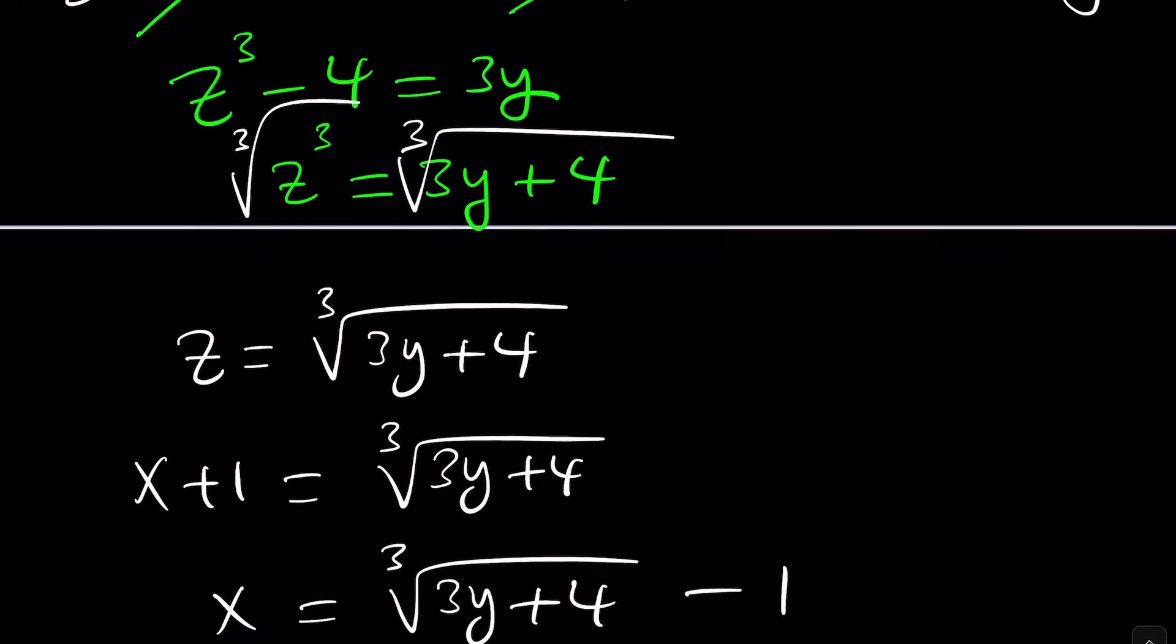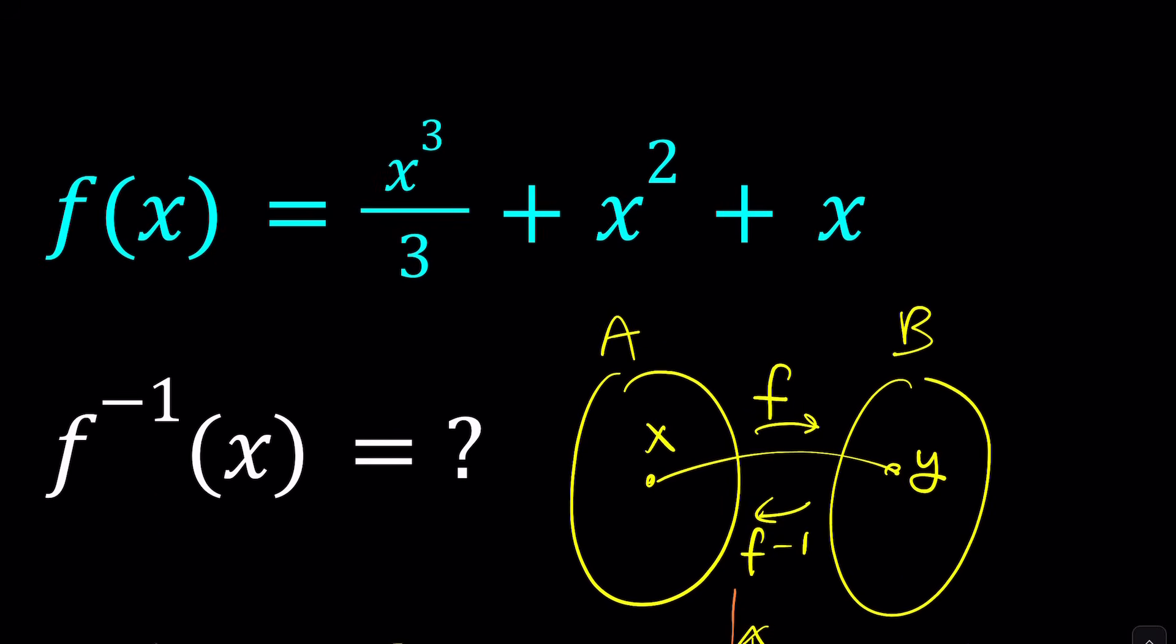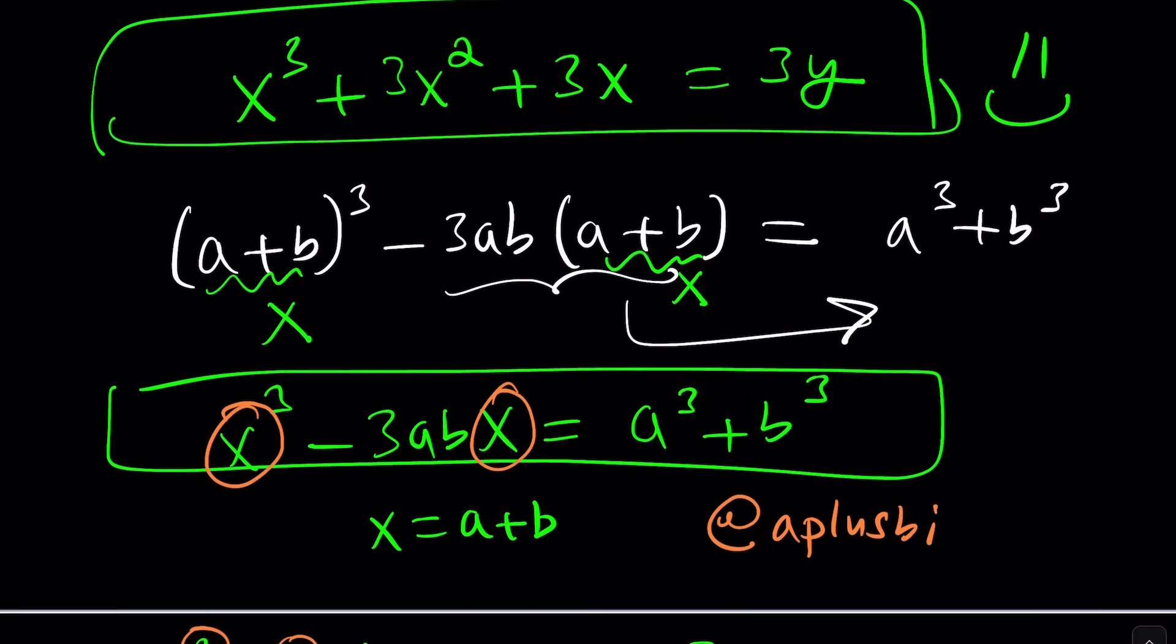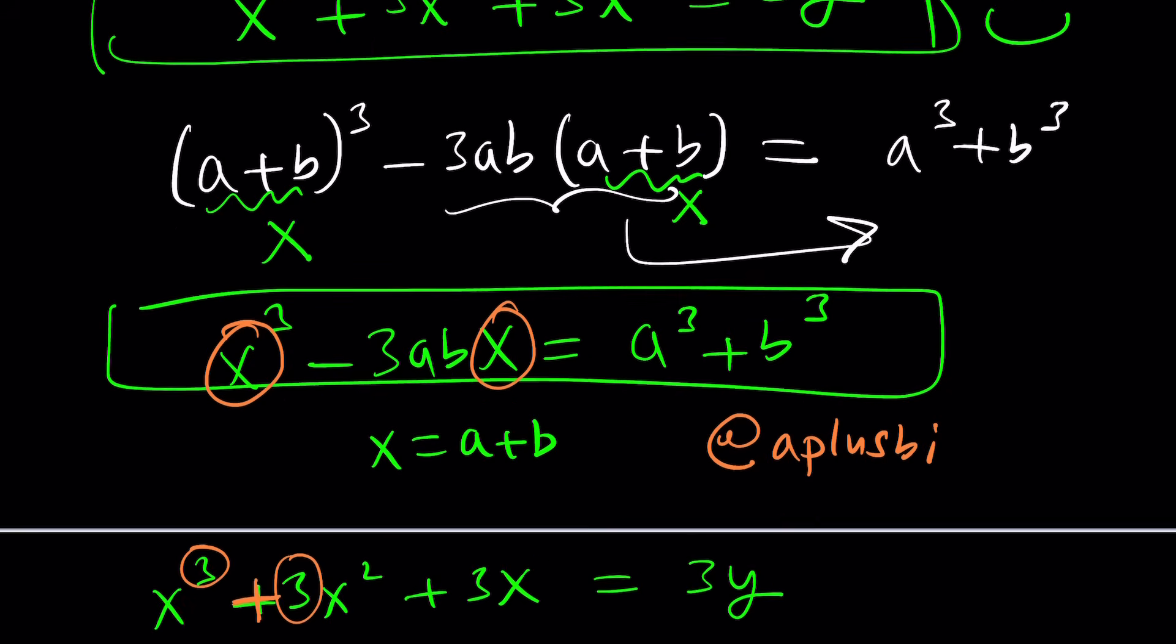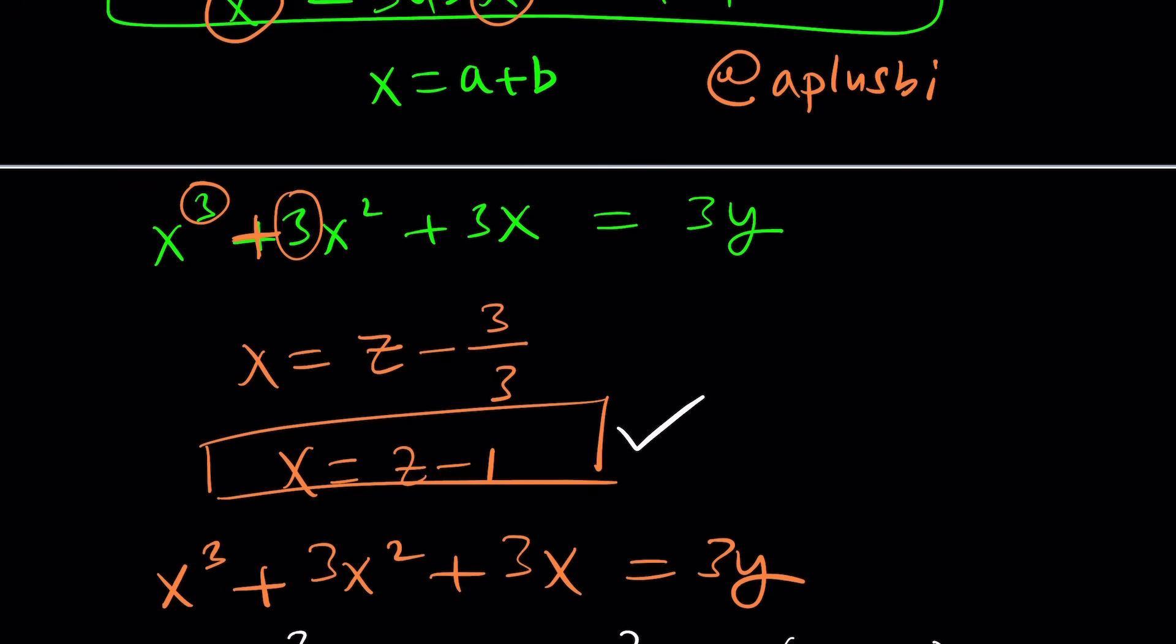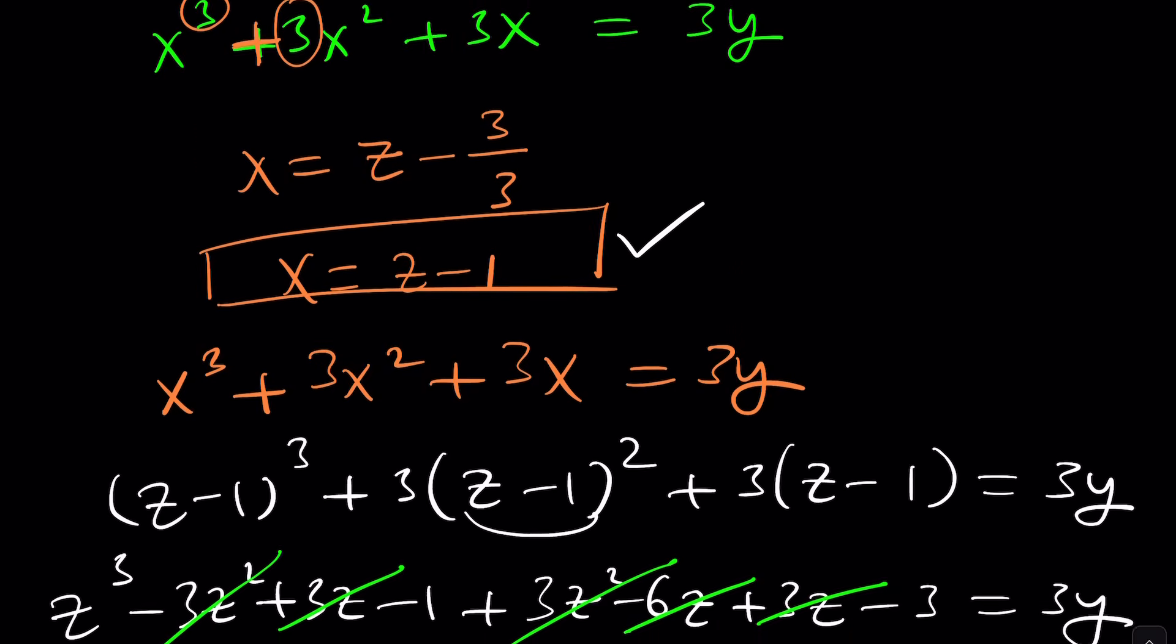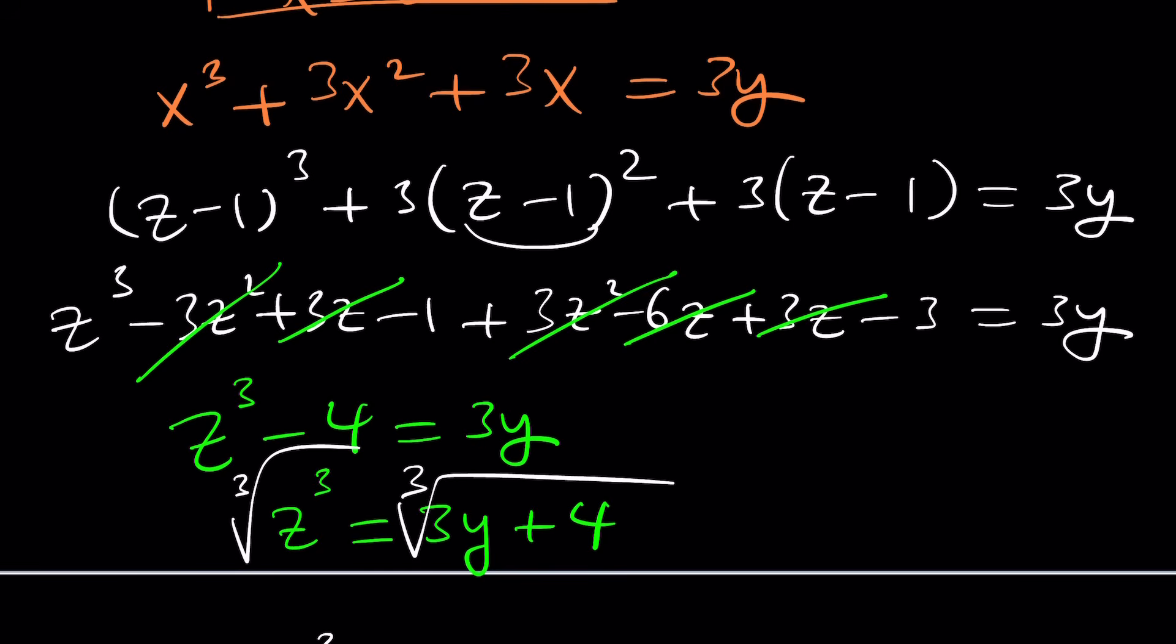Why did I get a different answer with the other method? Let's check our work. We multiplied by 3, getting x³ + 3x² + 3x = 3y. Then I replaced x with z - 1. When I replaced x with z - 1, I got (z-1)³ + 3(z-1)² + 3(z-1). Let me check. I think I messed up somewhere. I see my mistake. It's 3z² - 6z + 3. I forgot the additional +3 here. I need to expand and multiply by 3, which is the extra 3 I forgot.